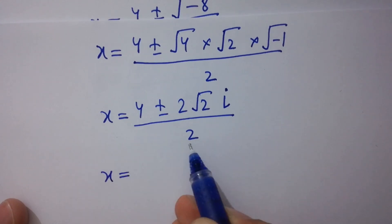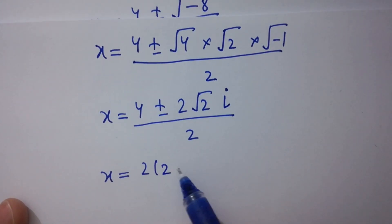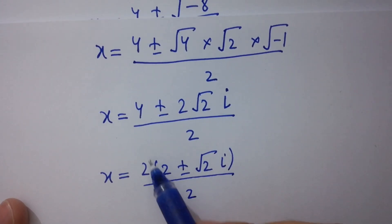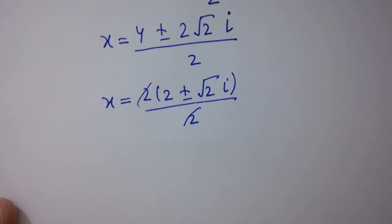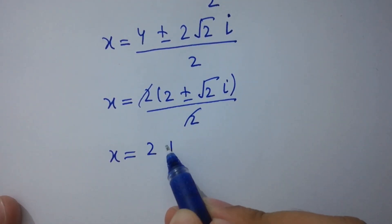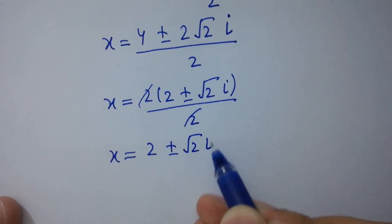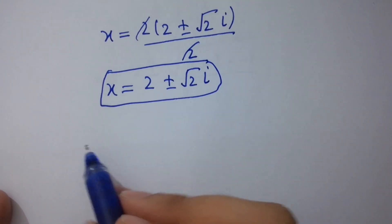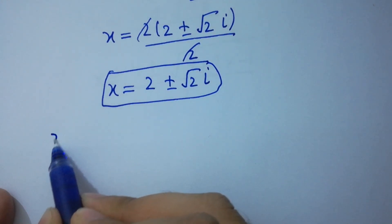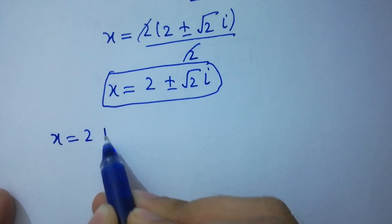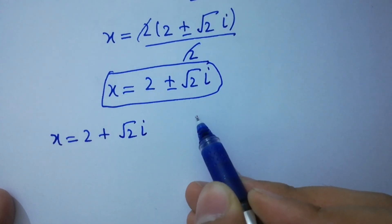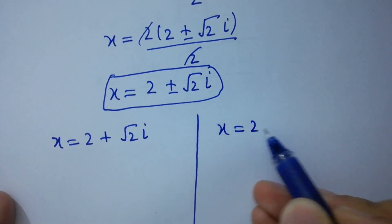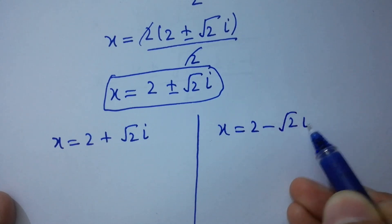The 2 in the numerator and denominator cancel, giving x equals 2 plus or minus square root of 2 times i. So our two complex solutions are x equals 2 plus square root of 2i, and x equals 2 minus square root of 2i.